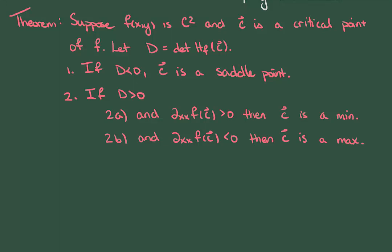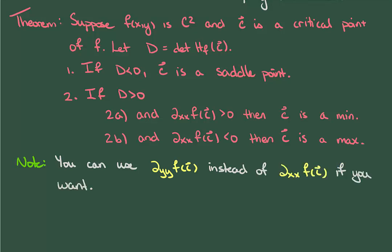Now you don't have to use the top left element of the Hessian, and you could instead use the bottom right element, the yy derivative. It's just important that you use one of the elements along the main diagonal.